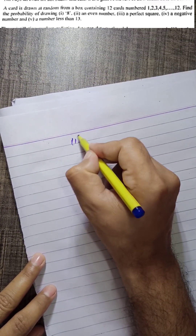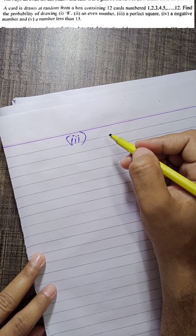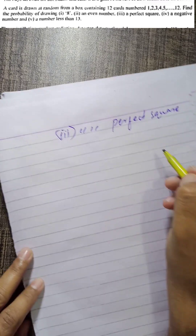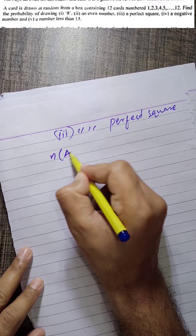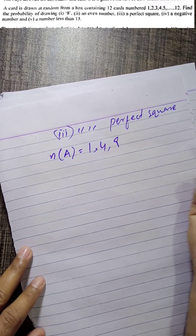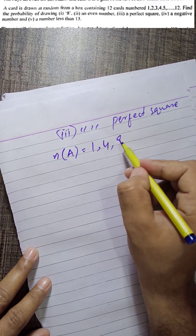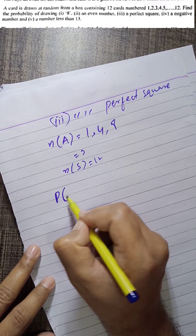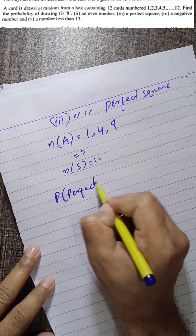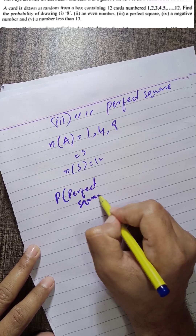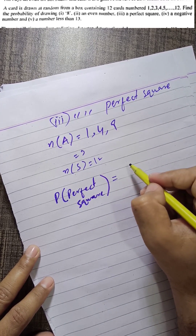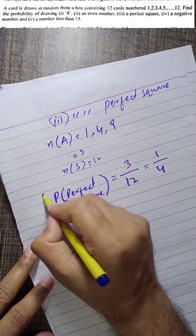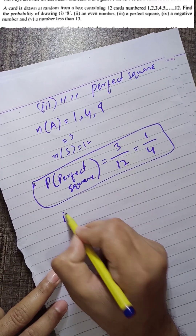Third: the probability of drawing a perfect square. The perfect squares from 1 to 12 are 1, 4, and 9 — so there are 3 perfect squares. The number of favorable events is 3 and the total is 12, so the probability of drawing a perfect square is 3/12, which equals 1/4.